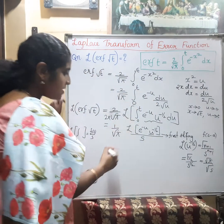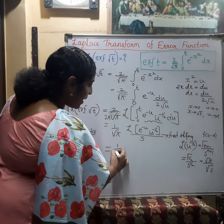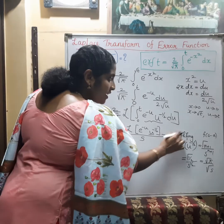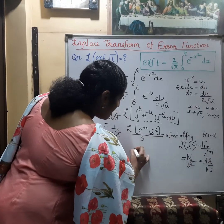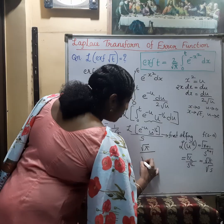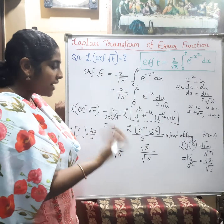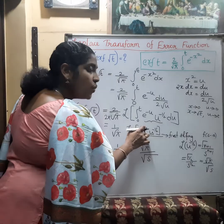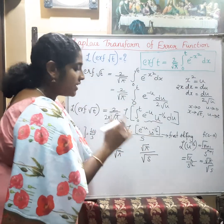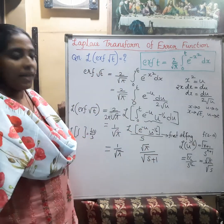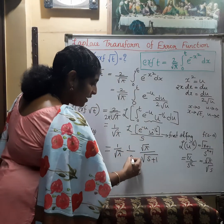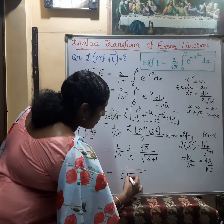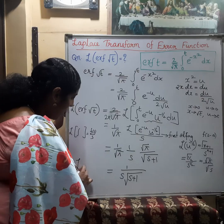On substituting, we get (1/√π) times root pi divided by root s. Now applying the first shifting theorem, f(s) becomes f(s minus a). The exponential function is e raised to minus u, so a equals minus 1, meaning s minus a becomes s plus 1. The pi and pi cancel, and the final Laplace transform is 1 divided by s times root(s+1). This is the Laplace transform of error function of root t.